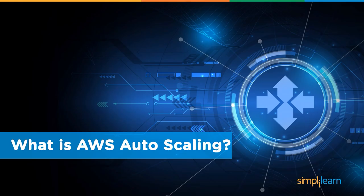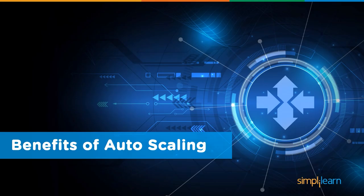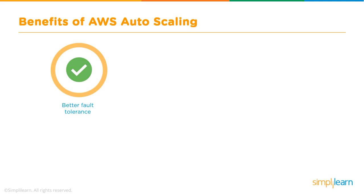AWS autoscaling is a service that helps users monitor their applications on servers and automatically adjust the capacity of their infrastructure to maintain steadiness. It can increase or decrease capacity for cost optimization and predictable performance at the lowest possible cost.